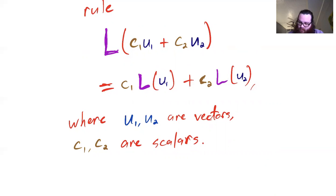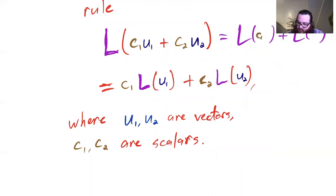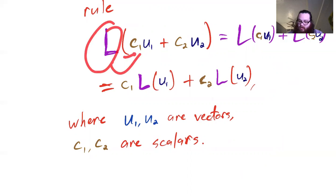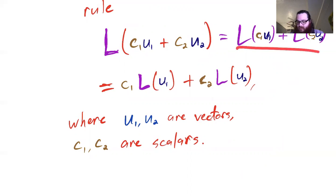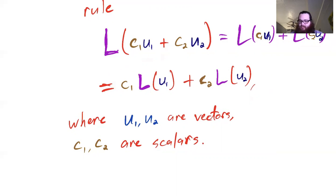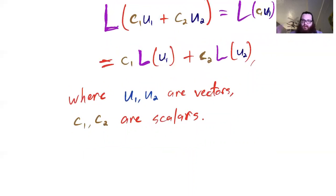Let me write out the steps. We get L of (c1·U1) plus L of (c2·U2). In this first step, we distribute L across the sum — that's part of being a linear operator. Then in each piece, we take the scalar and pull it out — that's another part of being linear. So linearity means you can distribute L across sums and pull out scalars, as you've probably seen in algebra.